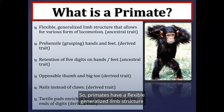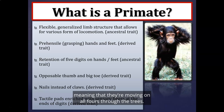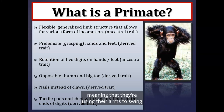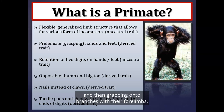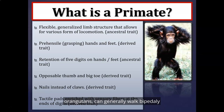Primates have a flexible, generalized limb structure that allows for various forms of locomotion. Some primates are arboreal quadrupeds, moving on all fours through the trees; some are terrestrial quadrupeds on the ground; some are brachiators, swinging from branch to branch using their arms; some are vertical clingers and leapers; and some are bipedal. Bipedalism predominantly identifies humans and our ancestors, though chimpanzees, gorillas, and orangutans can walk bipedally for short periods.